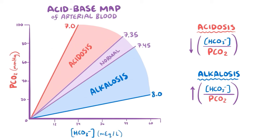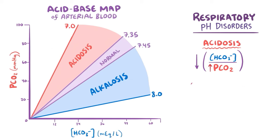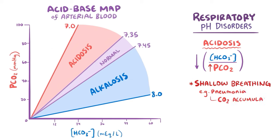Acidosis and alkalosis can be classified as either respiratory or metabolic. Respiratory pH disorders result from a problem with the respiratory system, resulting in a pCO2 that's too low or too high. For example, when breathing is too shallow due to diseases like pneumonia, carbon dioxide can't be eliminated efficiently and accumulates in the blood. The pCO2 rises and pH decreases, causing respiratory acidosis — represented on the acid-base map by pH values much lower than 7.35 and a pCO2 above 45 mmHg.